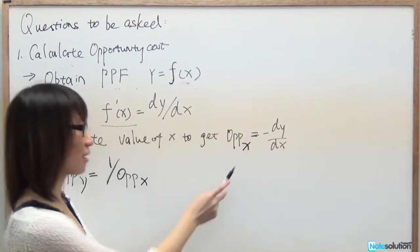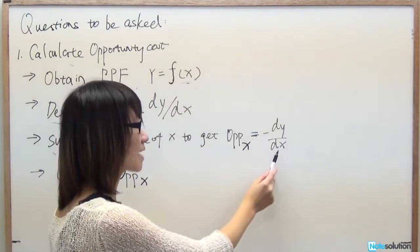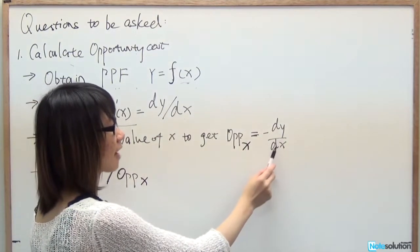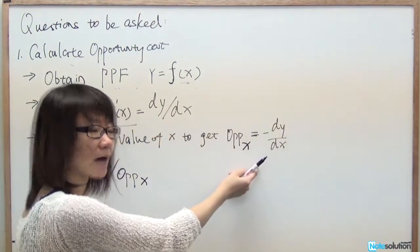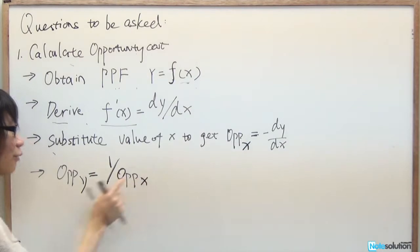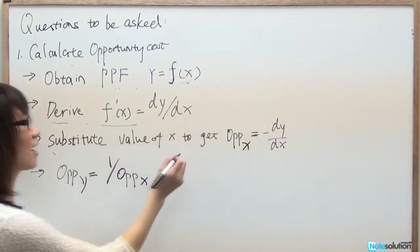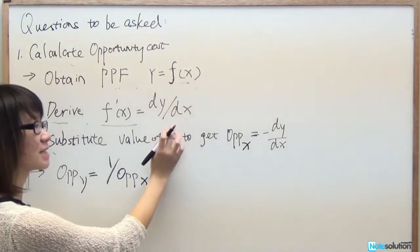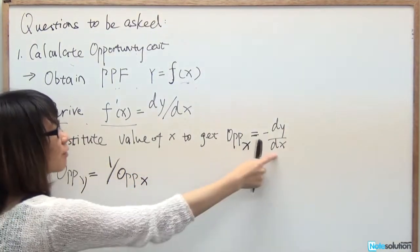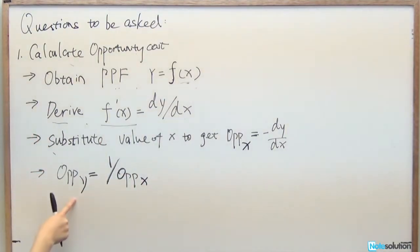The opportunity cost of X is the units of Y we give up to obtain a little more of X, so it equals negative dY/dX to keep the number positive. Once we have the opportunity cost of X, the opportunity cost of Y equals 1 over the opportunity cost of X.